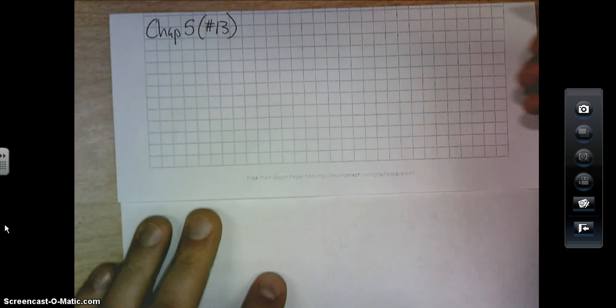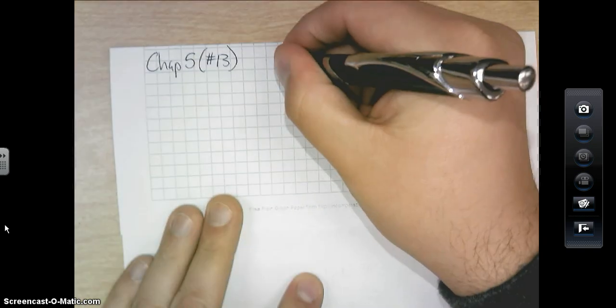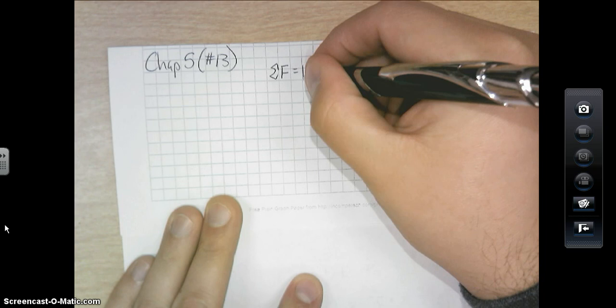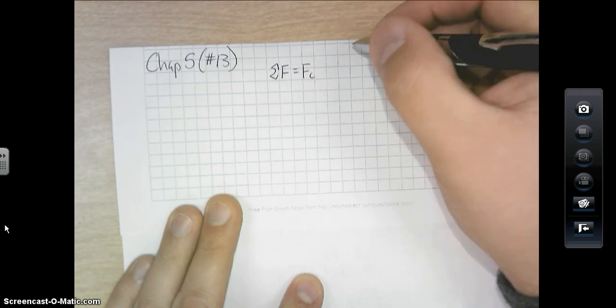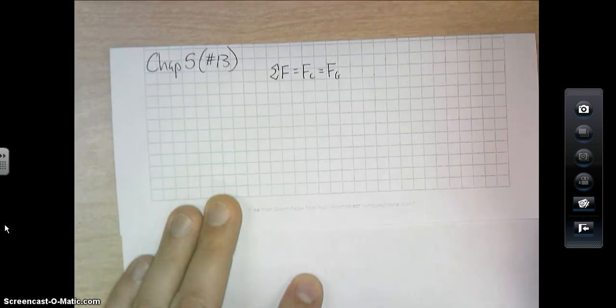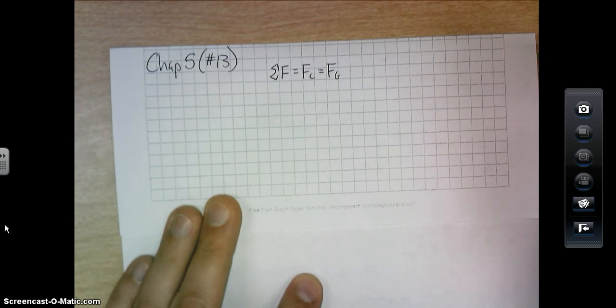So one way to think about this would be that at the very top of the circle, the sum of the force, or the centripetal force, is going to be equal to F of G, or your weight.